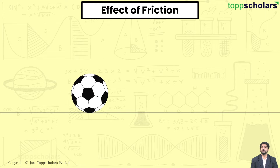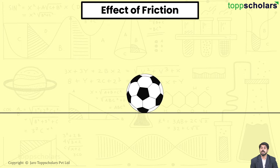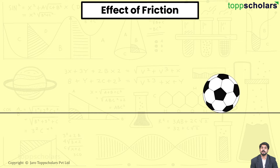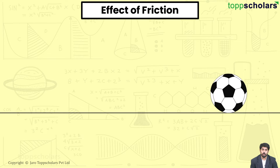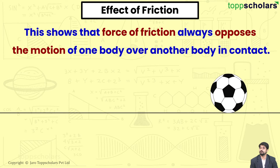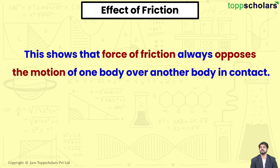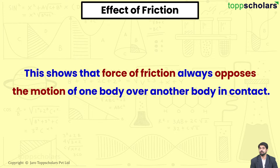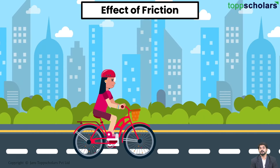The moving object gradually slows down and finally stops due to the force of friction. This shows that force of friction always opposes the motion of one body over another body in contact.